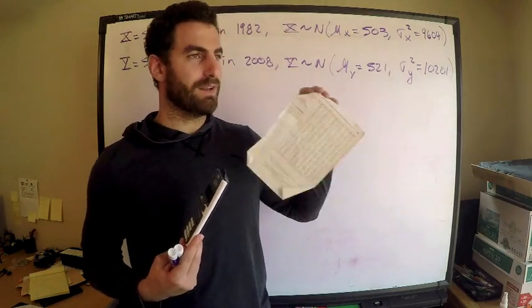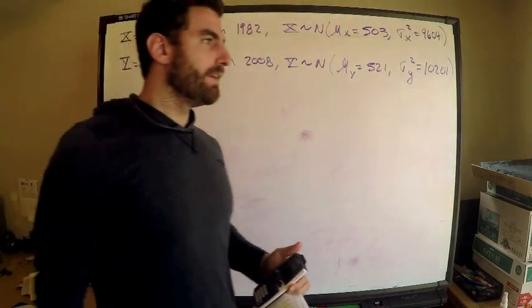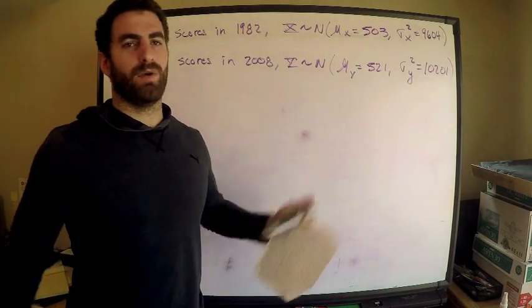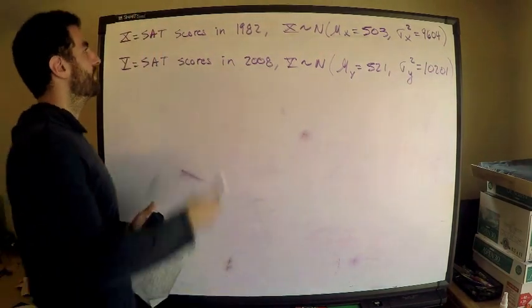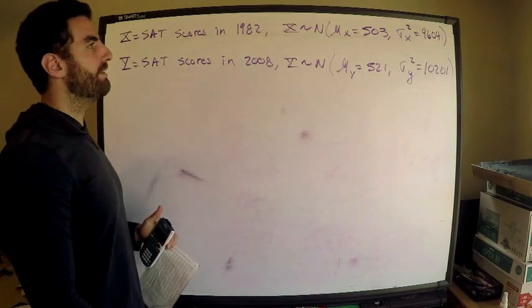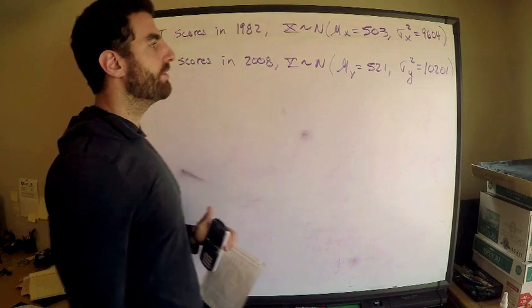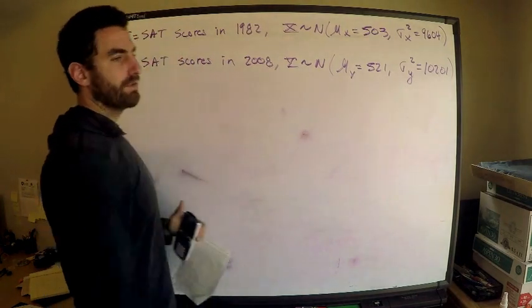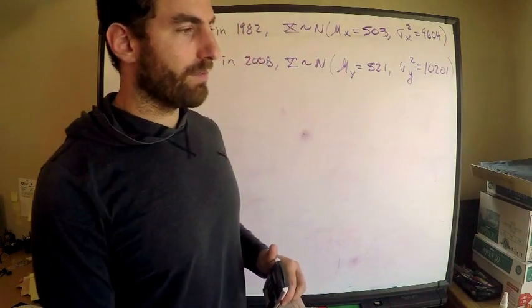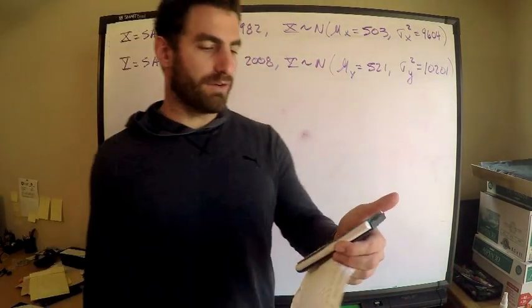You need one of these and you need one of these. For this question, here's what I decided to call my random variables, X and Y. I have the SAT scores 1982, this is for Abby's mother, and the mean that year was 503, variance 9604. I also have the SAT scores 2008 for Abby herself, where the mean was 521 and the variance was 10201.